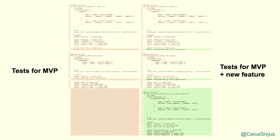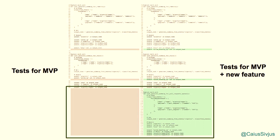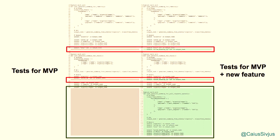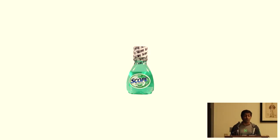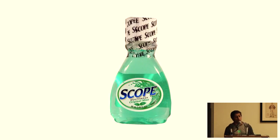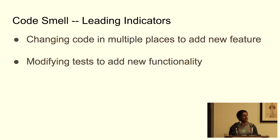What about our tests? Looking at the diff between our MVP tests and the test with the new feature, we have code at the bottom that checks we generate the right summary text for new pull requests, but we also have to go back and change tests we've already written to ensure they don't trigger this new functionality. This is because the function we're testing is doing many different things. Every time we add new functionality, we increase the size of our test code and the function has a larger surface area to test.